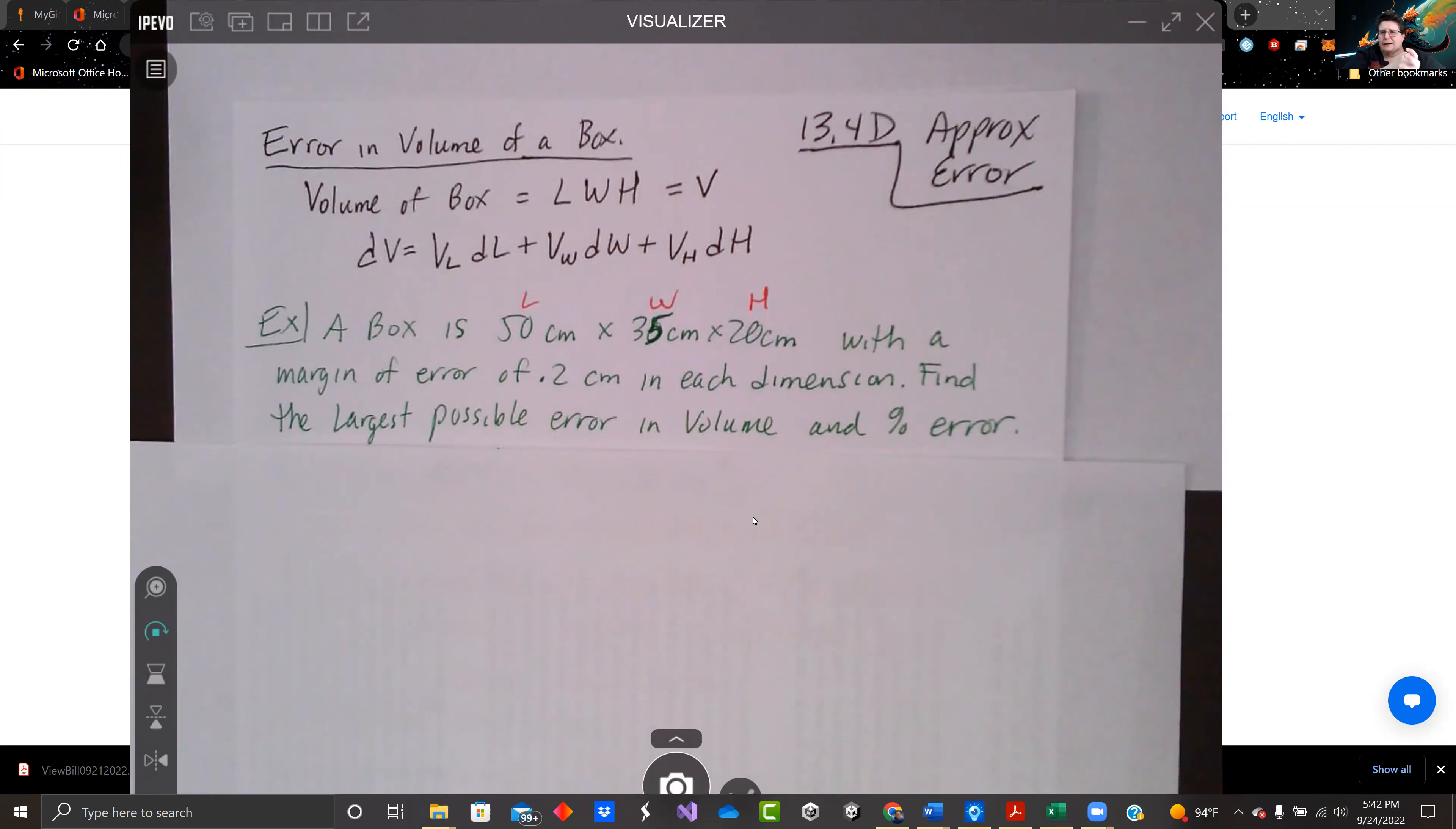Of the box. We've got our box manufacturing company. We make boxes that are 50 centimeters by 35 centimeters by 20 centimeters. Since it's a machine, there is a margin of error: 0.2 centimeters in each dimension. We want to find the largest possible error in volume and the percentage error.